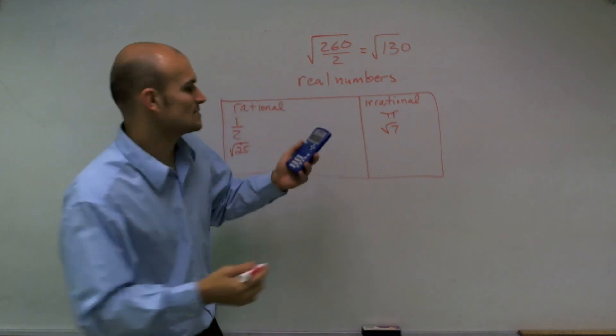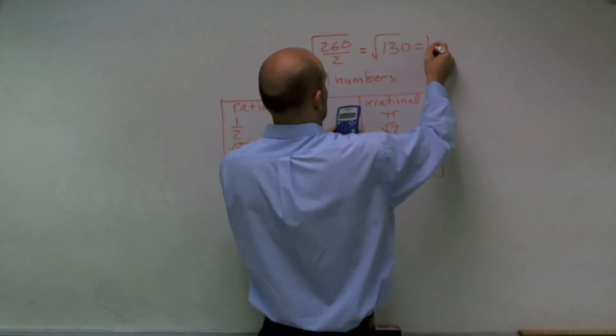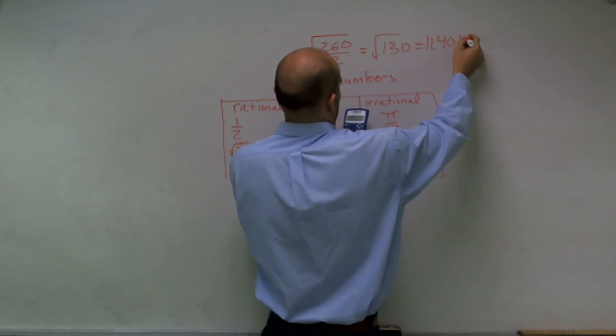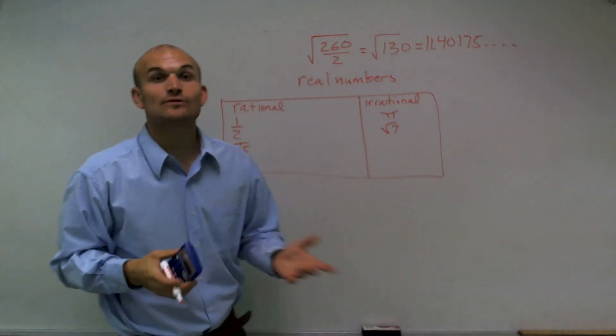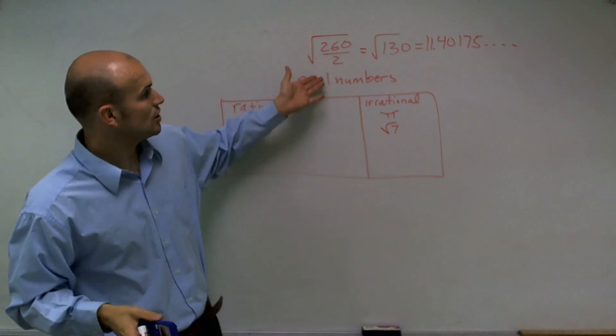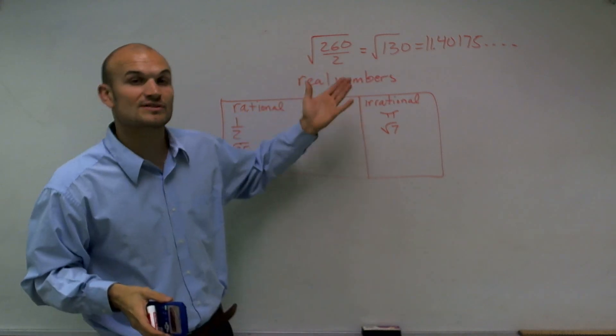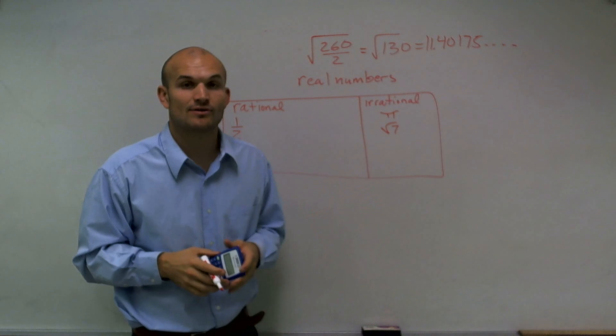So I take the square root of 130, and that's going to produce me a decimal. And since that decimal goes on and on forever, this is going to be an irrational number. So square root of 260 divided by 2 is going to be in the subset of irrational numbers.